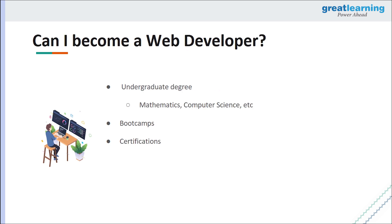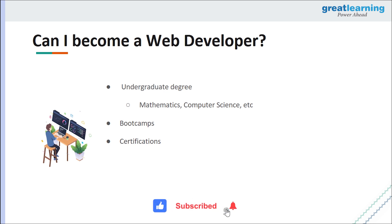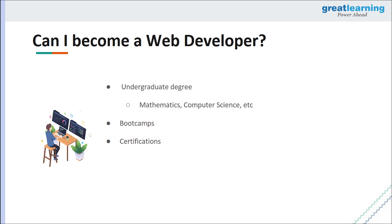You might be thinking: can I become a web developer? If you have an undergraduate or master's degree in mathematics and computer science, it is easy to switch to these roles. But even without those degrees, you can still attend boot camps and do certifications from Udacity, Udemy, or even free platforms like YouTube.